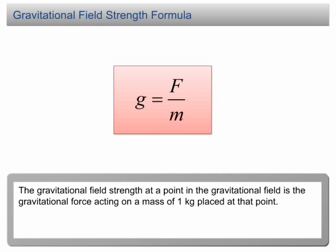we write this as g equals F over m, where g is the gravitational field strength, F is the gravitational force acting on an object, and m is the mass of the object.